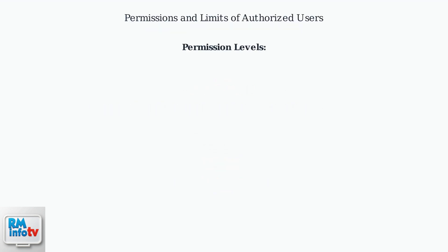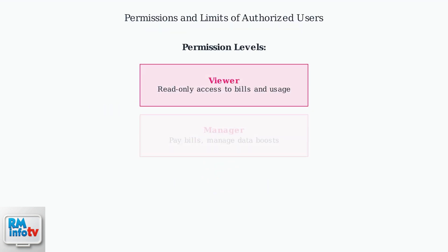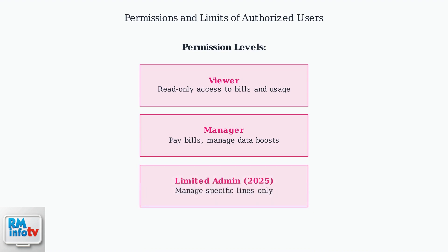Authorized users can be assigned different permission levels such as Viewer, Manager, or Limited Admin. Viewer allows read-only access to bills and usage, while Manager permits actions like paying bills and managing data boosts. Limited Admin, a new feature in 2025, allows managing specific lines but not the entire account.